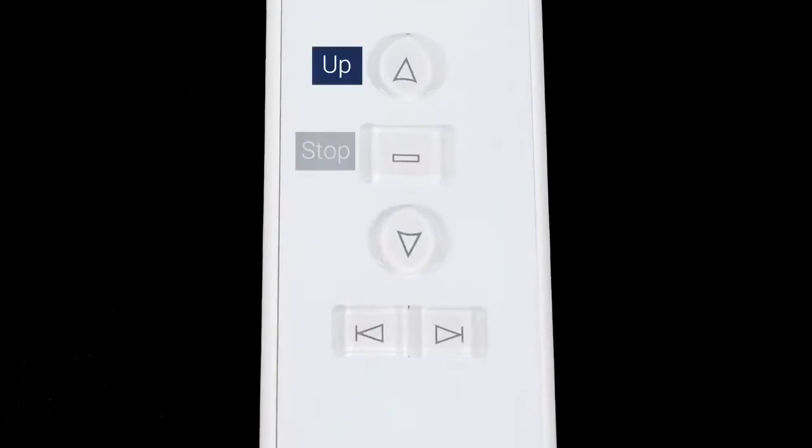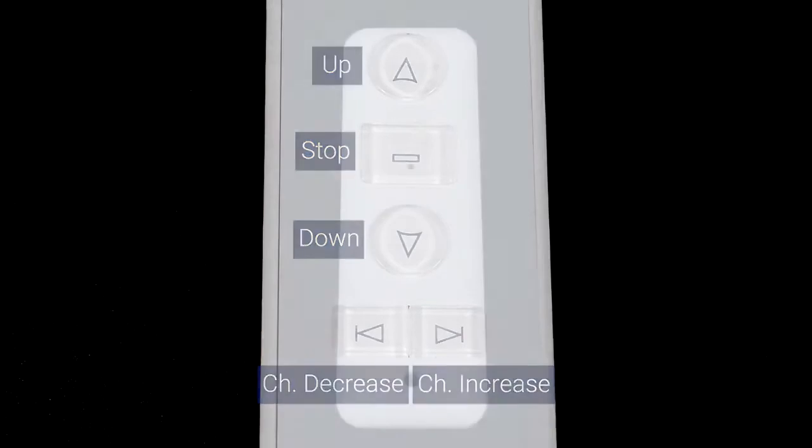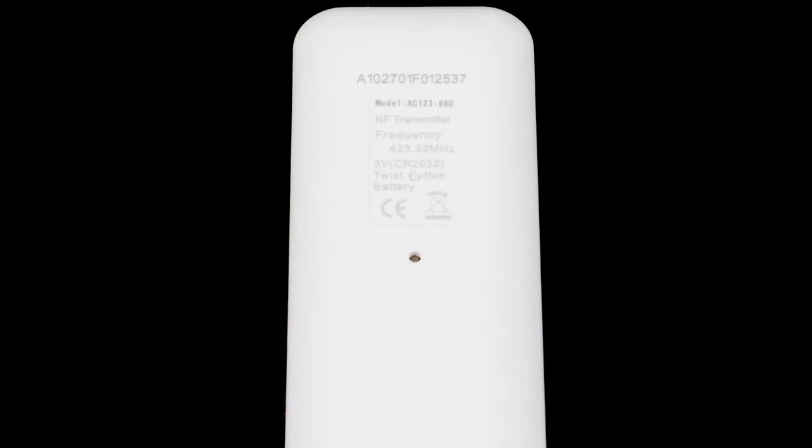You will see five buttons on the front of your remote: Up, Stop, Down, Channel Increase, and Channel Decrease. On the back of the remote, there is also a program button that can be pressed with a thin object like a paperclip.